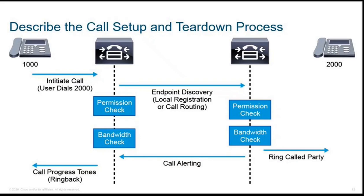Now here we can see a call setup and teardown process. So how it happens is, let's suppose we have an IP phone with the DN 1000, and on the other hand, we have an IP phone with the DN 2000.